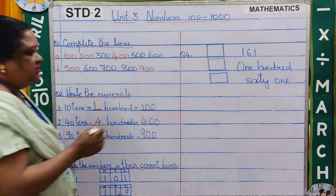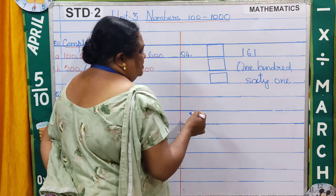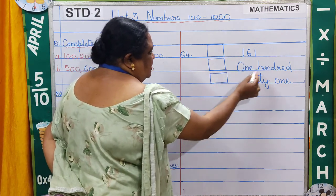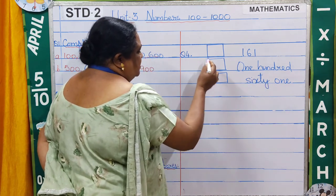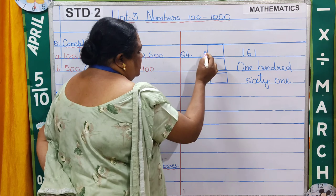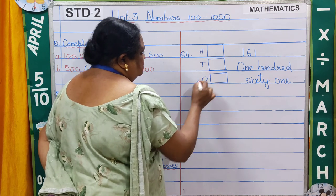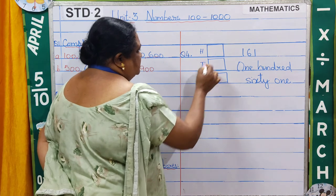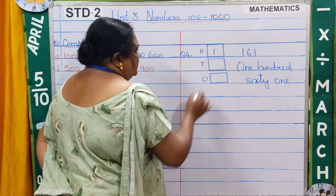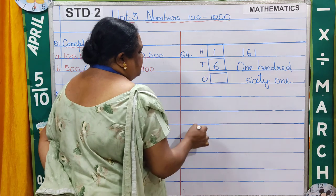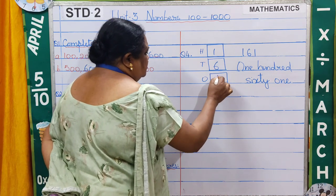Coming to question number 4: 161. We write it as 161 and put it into the correct boxes — hundreds, tens and ones. In hundreds place it is 1, in tens place it is 6, and in ones place it is 1.